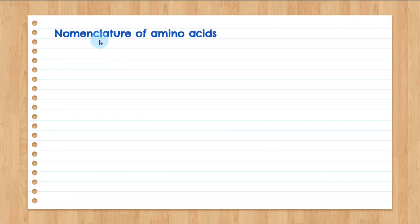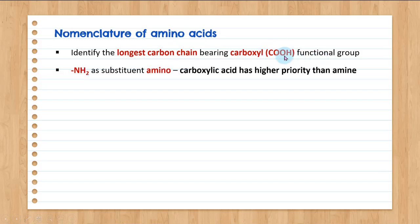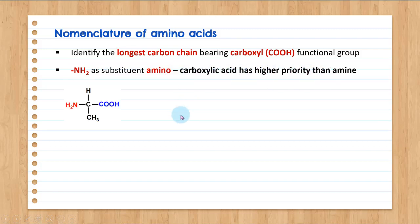Next, let's look at the nomenclature of amino acids. We need to identify the parent chain, which is the longest carbon chain bearing the COOH functional group, as it has the highest priority. The NH2 is a substituent and we name it as the amino group. Carboxylic acid has higher priority compared to amino.